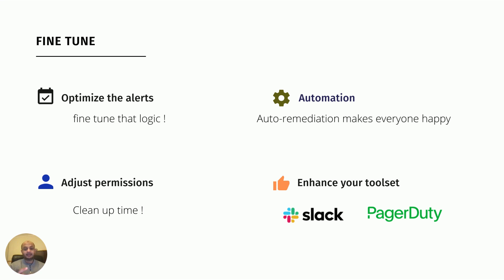I also definitely recommend enhancing your toolset with things like Slack and PagerDuty. The cloud moves very fast — don't rely on email. Tools like Slack can create automation workflows through your pipelines, and PagerDuty can be a real game changer. You can use open-source or free alternatives — the key is adopting that mindset of tools that can really optimize your environment.